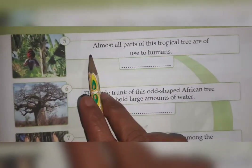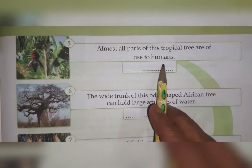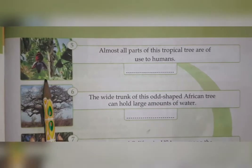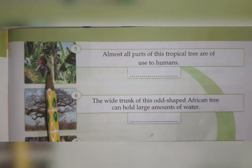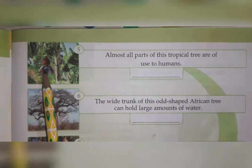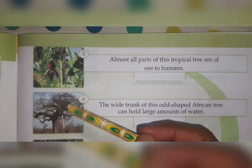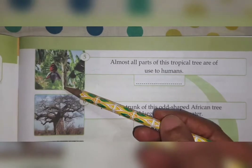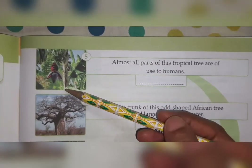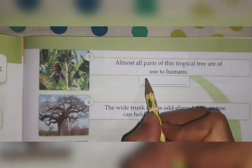Fifth: 'Almost all parts of this tropical tree are of use to humans.' You can see small bananas on this tree — we eat bananas, we make vegetable from the banana flower, we use the whole tree during occasions like Diwali, and sometimes we eat food on its leaves. This is a banana tree — B-A-N-A-N-A.